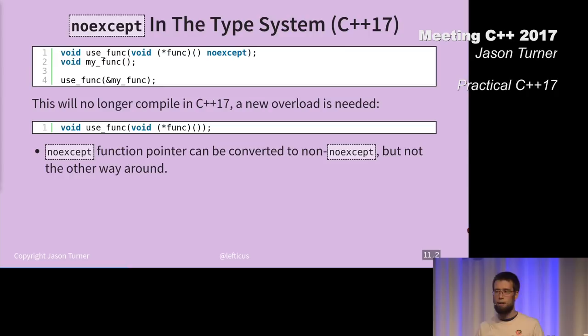Noexcept is now part of the type signature of a function. This code, the top block, can compile in C++ 14, but cannot compile in C++ 17. As far as I know, this is the only breaking change in C++ 17. It can break existing code.